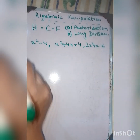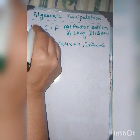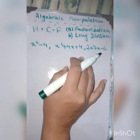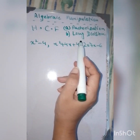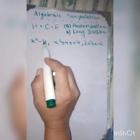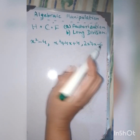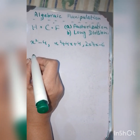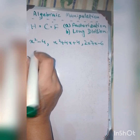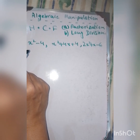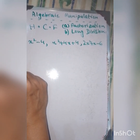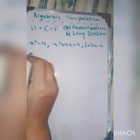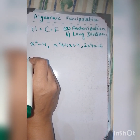We are going to find the highest common factor using both the factorization method and the long division method. I have three expressions already written. Sometimes it is difficult to find factors of given expressions, so in that case the division method can be used. Let's determine the HCF of the following polynomials by the factorization method first.